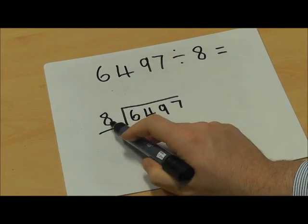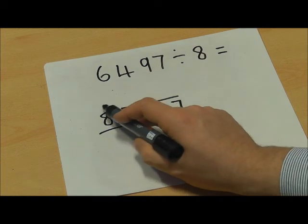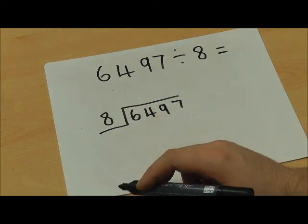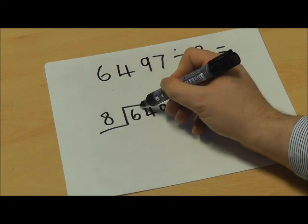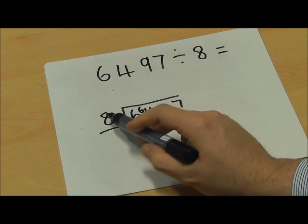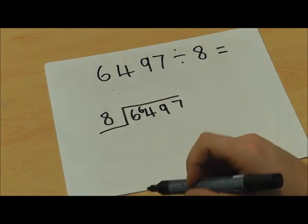First of all, I'm going to see how many times 8 goes into 6. But because this number is larger than 6, we know that it isn't going to go in at all. So we're going to carry that 6 to the next digit. Now we're going to look at how many times 8 goes into 64.